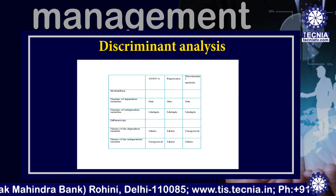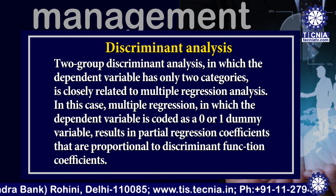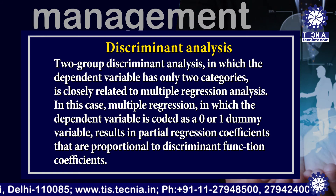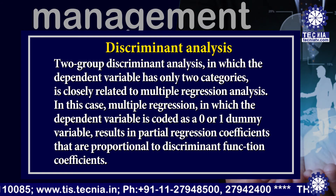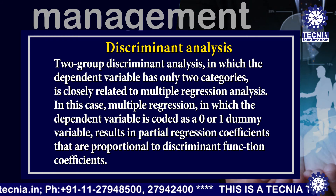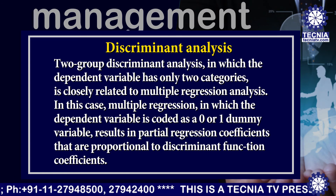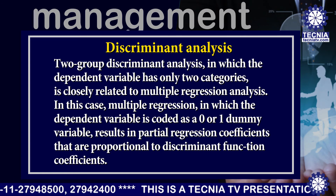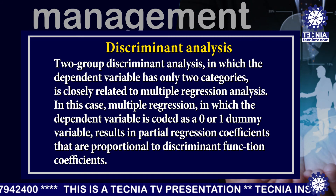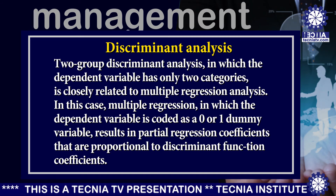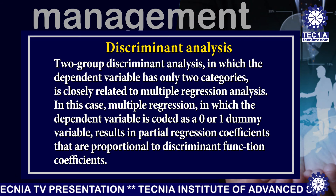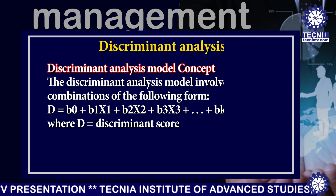Two-group discriminant analysis, in which the dependent variable has only two categories, is closely related to multiple regression analysis. In this case, multiple regression in which the dependent variable is coded as 0 or 1 as a dummy variable results in partial regression coefficients that are proportional to discriminant function coefficients.